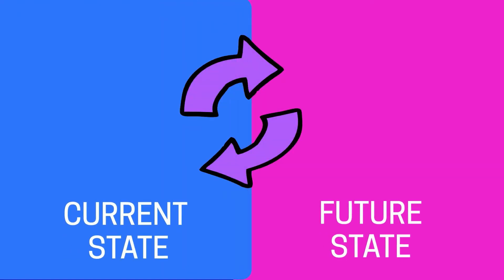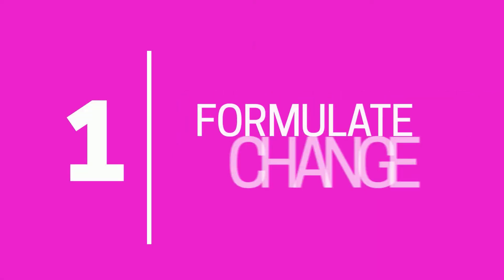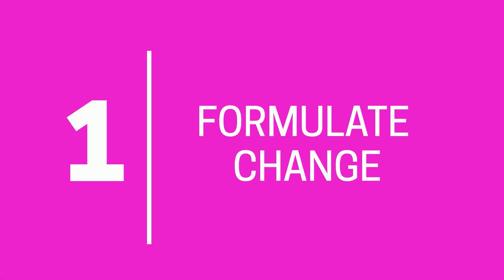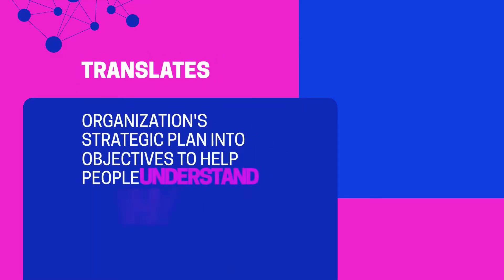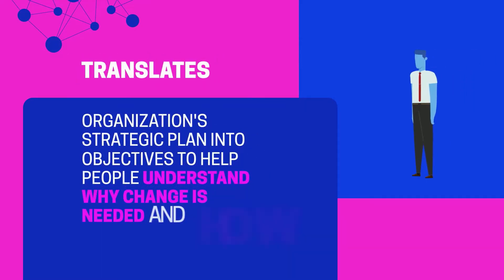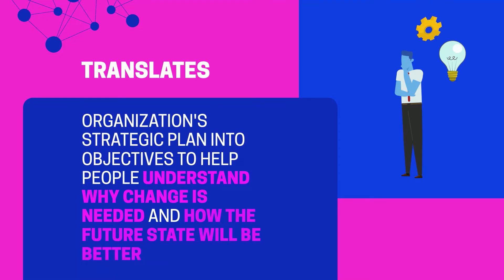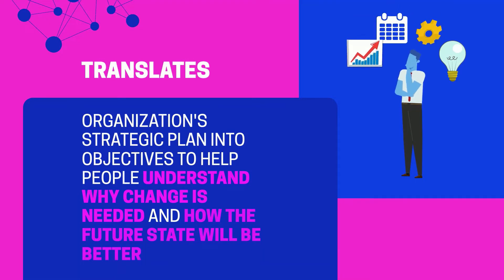Major steps in the movement from the current state to the future state include: Number one is formulate change, which translates the organization's strategic plan into objectives to help people understand why change is needed and how the future state will be better.